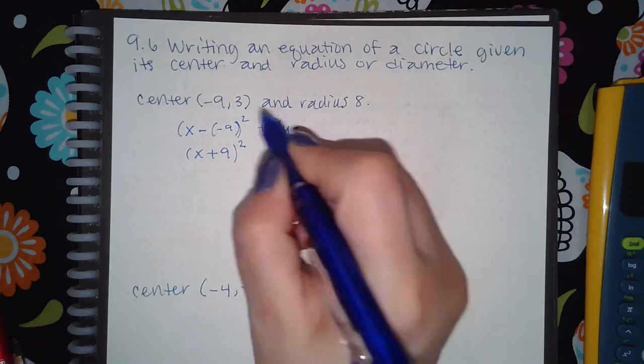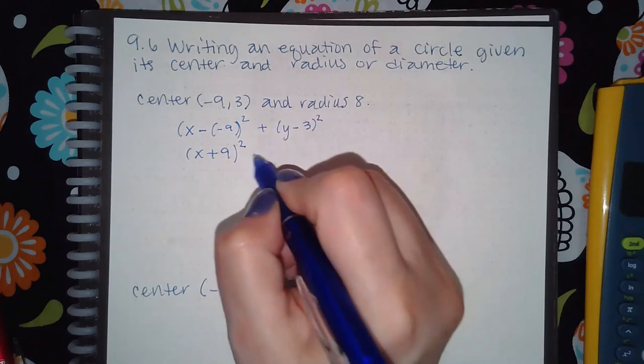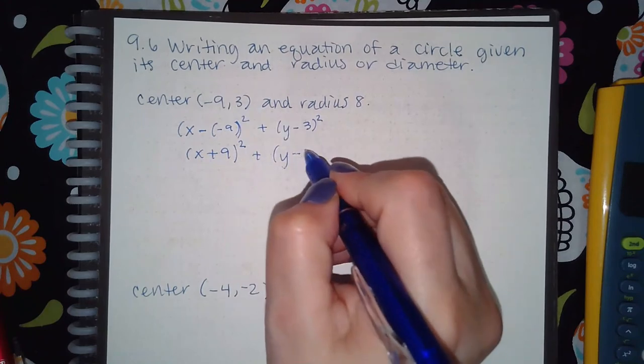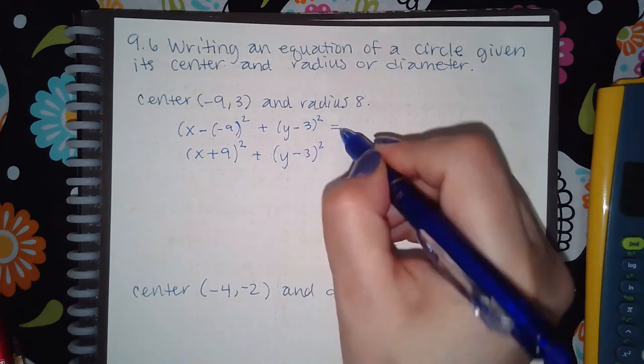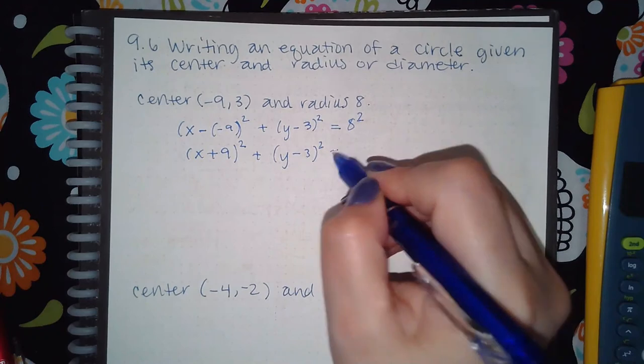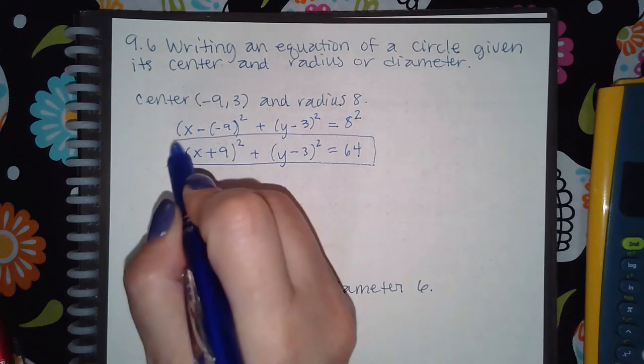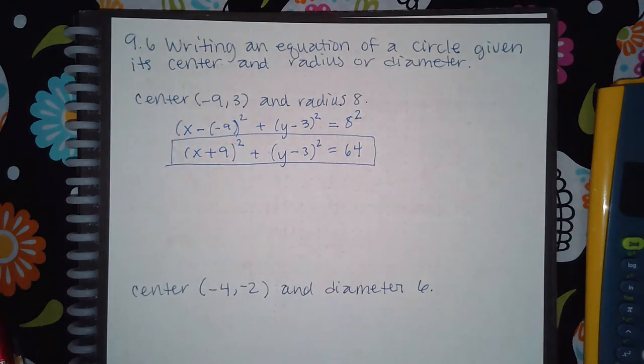Plus y minus the y coordinate, or you can use the opposite sign - the opposite sign of positive 3 is negative 3, and then equal to the radius squared which is going to be 64. Now it doesn't say I need to actually foil all of that out, so you can write this in as your answer and you should be good to go.